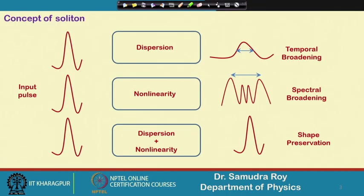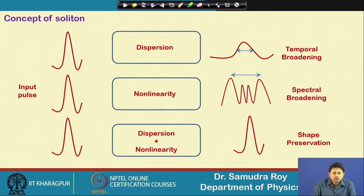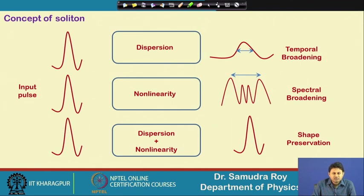Let us go back to today's lecture. The concept of soliton — this figure we have already shown in the previous class. When the pulse is propagating in a dispersive medium there will be temporal broadening, and when the pulse is moving in a nonlinear medium there will be spectral broadening. But if the pulse is moving in a medium where both dispersion and nonlinearity are present, there is a possibility that the two effects may counterbalance each other, and as a result we have something that preserves its shape — this is the concept of soliton.